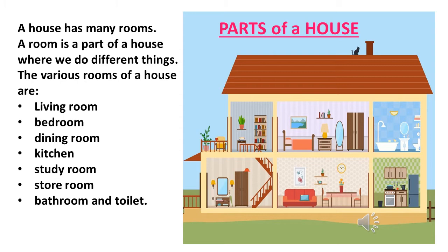Parts of a house. A house has many rooms. A room is a part of a house where we do different things. The various rooms of a house are: living room, bathroom, dining room, kitchen, study room, storeroom, and bathroom and toilet.